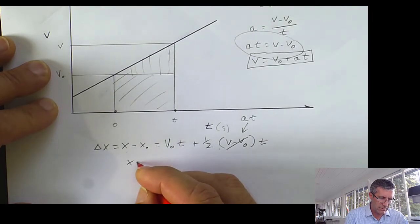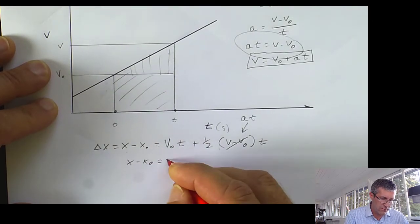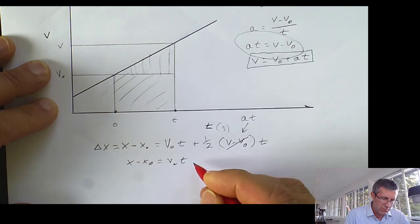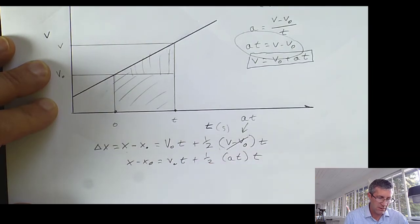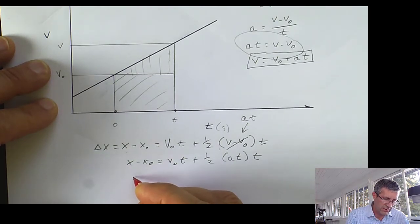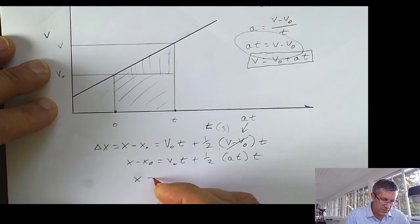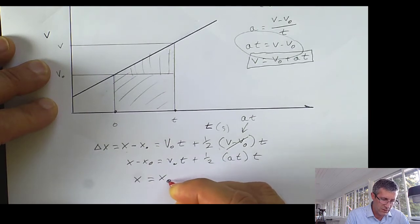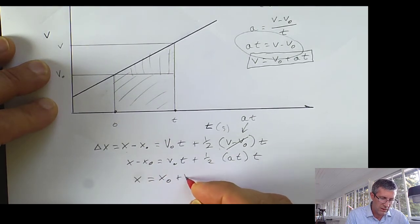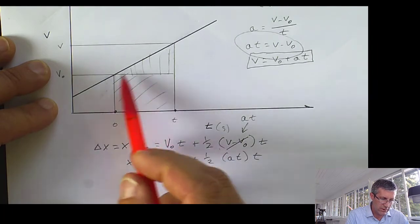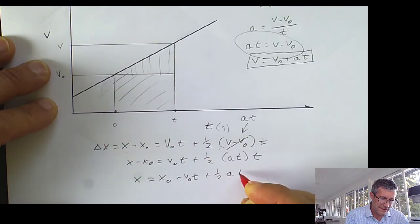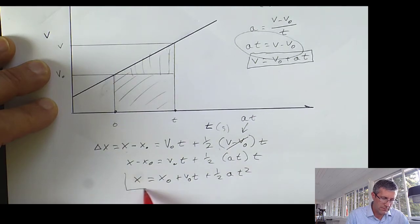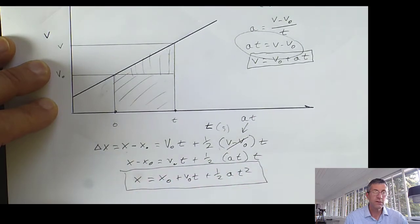I'm going to end up with X minus X₀ is going to be V₀T plus 1/2 acceleration times time times time again. And I'm just going to rearrange this to make it a little bit cleaner. My final position is equal to my initial position plus V₀T plus 1/2 A T². This is equation number two.